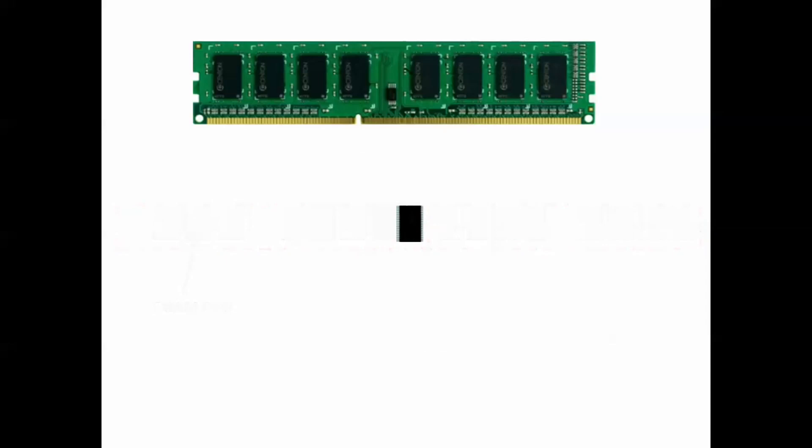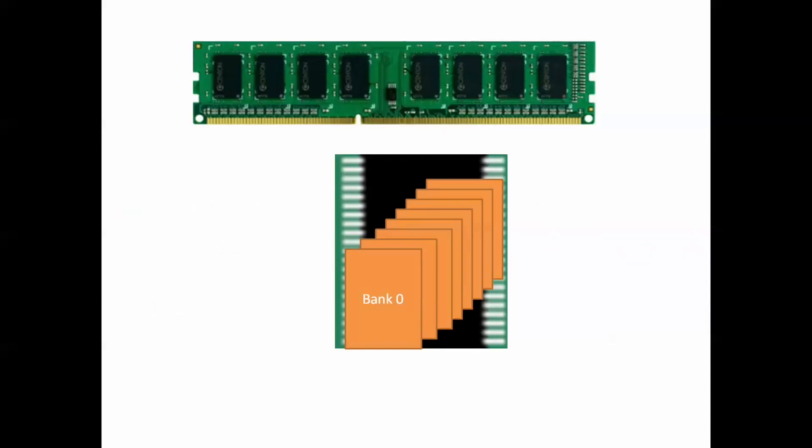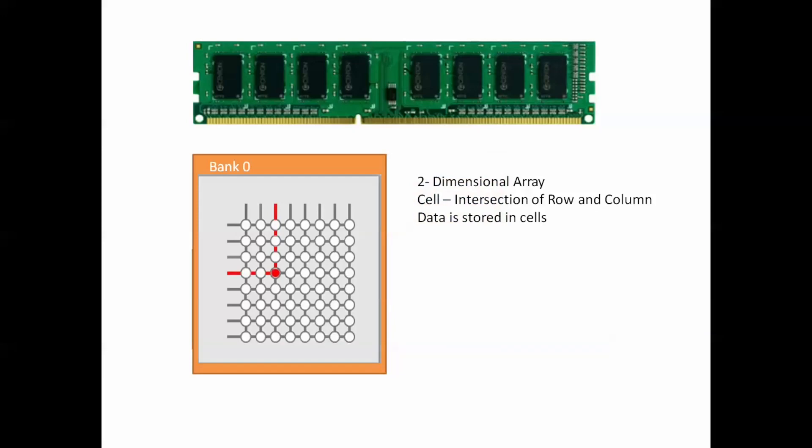Now, each DRAM chip can further be divided into memory banks, and these memory banks are two-dimensional arrays that consist of rows and columns. The intersection of row and column is called a cell, where data is being stored in a matrix form.